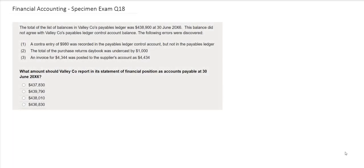In this question you are being asked to find the amount that Valley should report in its statement of financial position as accounts payable at the 30th of June 20x6.